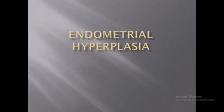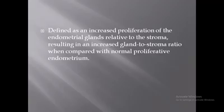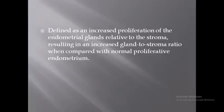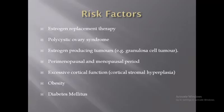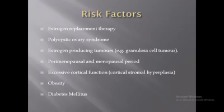The next topic is endometrial hyperplasia. Endometrial hyperplasia is defined as an increased proliferation of endometrial glands relative to the stroma, which results in an increased gland-to-stroma ratio when compared with normal proliferative endometrium. Risk factors include estrogen replacement therapy, polycystic ovary syndrome, estrogen-producing tumors, obesity, and diabetes.